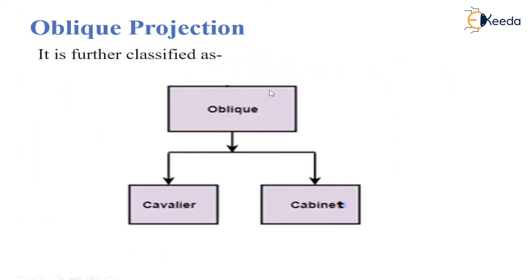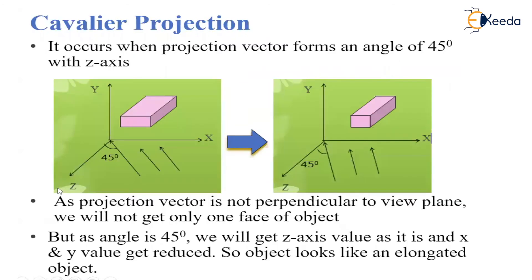Oblique projection is further classified as cavalier projection and cabinet projection. Cavalier projection occurs when the projection vector forms an angle of 45 degrees with the z-axis. When we take the projection on the view plane, it makes an angle of exactly or approximately 45 degrees.